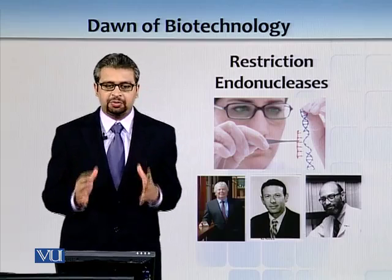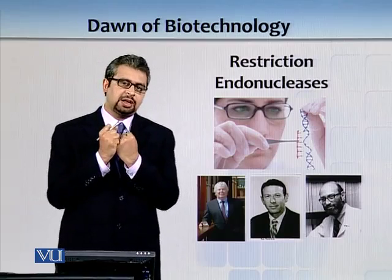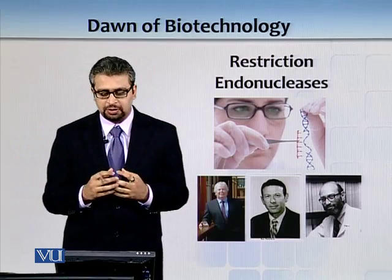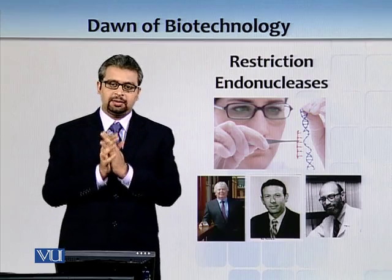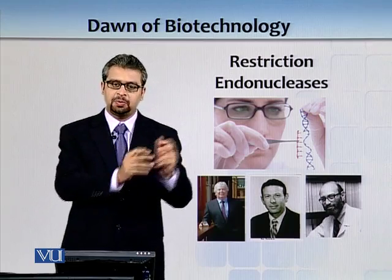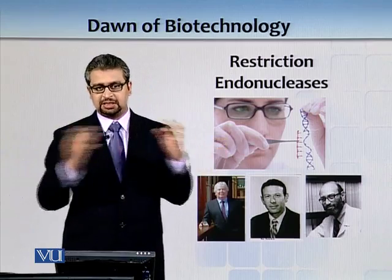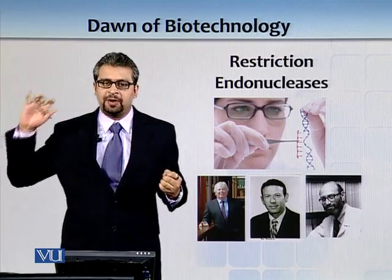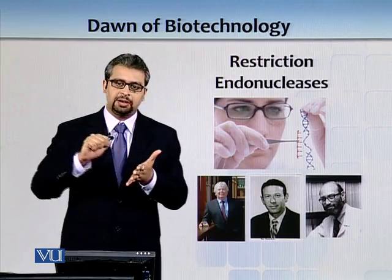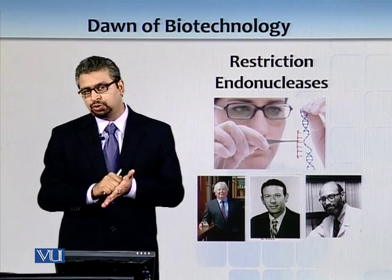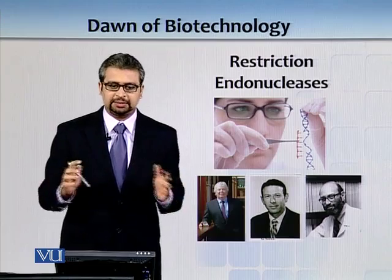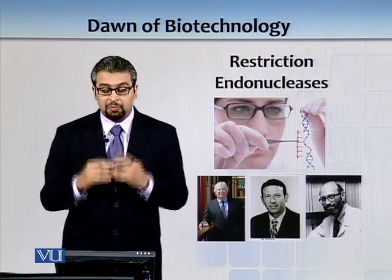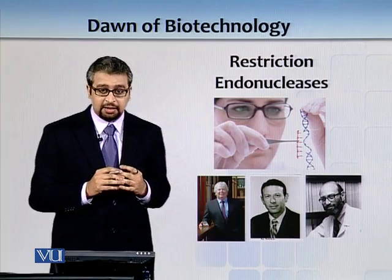The major breakthrough in biotech research came from the discovery of restriction endonucleases. Prior to that, we knew the sequence of DNA but couldn't cut it selectively. Three scientists — Herbert Boyer, Stanley Norman Cohen, and Paul Berg — discovered restriction endonucleases and kick-started the biotech revolution.